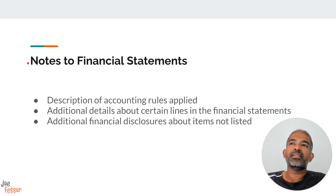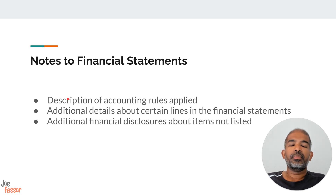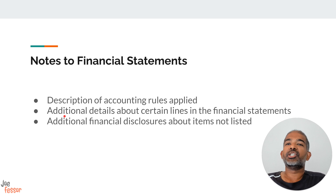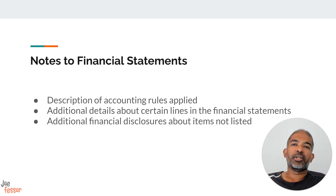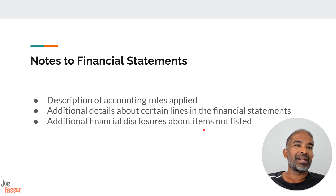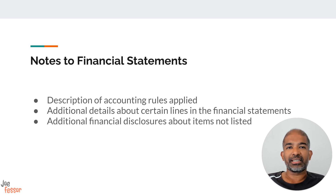Finally, let's look at notes to financial statements, also simply known as footnotes. They are used to provide any kind of additional information or disclosures — for example, a description of the various accounting rules applied, or additional details about certain lines in the financial statements. They can provide explanation or breakdown for certain line items, and can also provide additional financial disclosures about items not listed — like if a firm is facing lawsuits or has some other arrangements with other stakeholders.